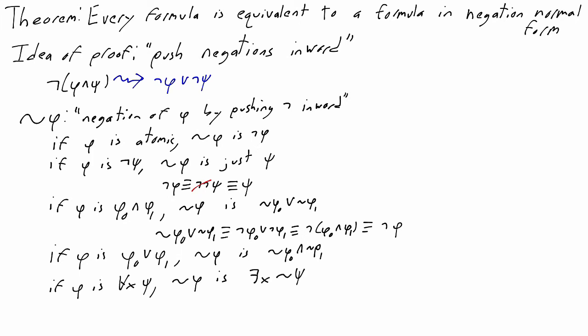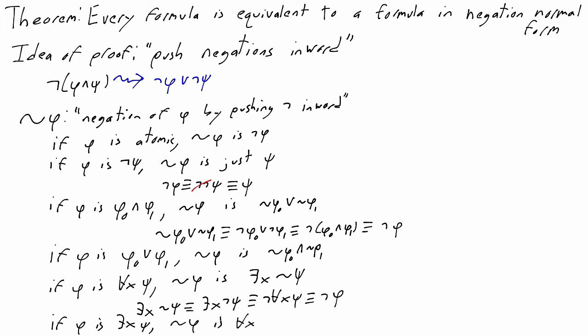And again, exists x squiggly negation of psi is going to be equivalent to exists x negation of psi, which is equivalent to not for all x psi. So squiggly negation of for all x psi is equivalent to not for all x psi. Finally, if phi is exists x psi, then squiggly negation of phi is for all x squiggly negation of psi.